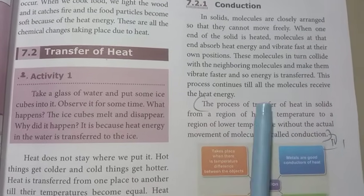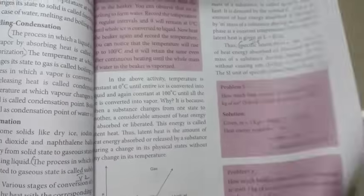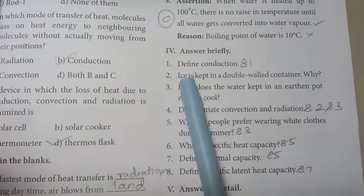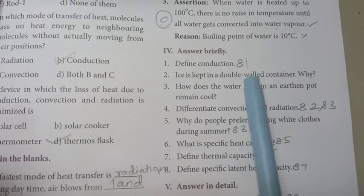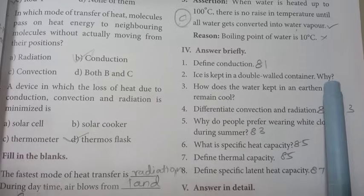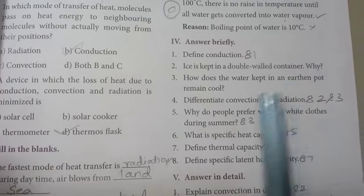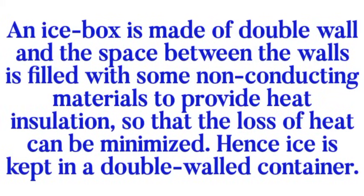So, Roman number 4, first one. In the four lines answer. Then, question number 2: Ice is kept in a double-walled container. Why? An ice box is made of double-walled and the space between the walls is filled with some non-conducting materials to provide heat insulation so that the loss of heat can be minimized. Hence, ice is kept in a double-walled container.